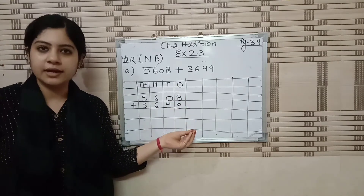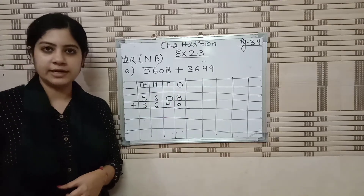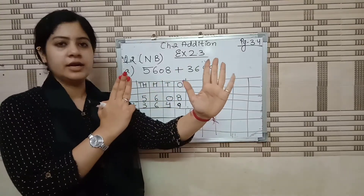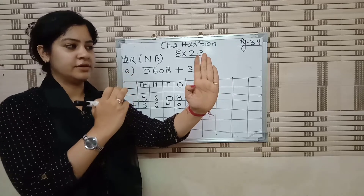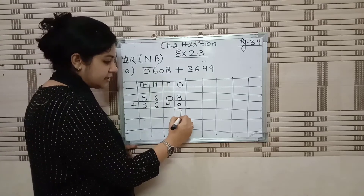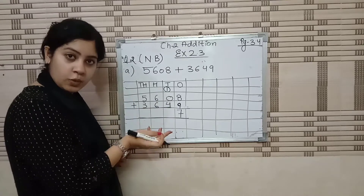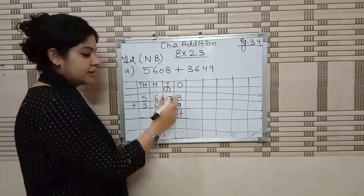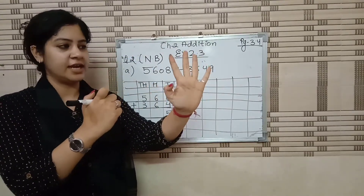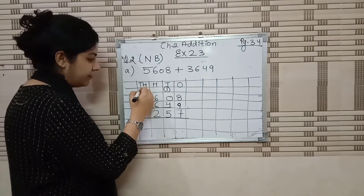Now start the addition from the ones place. 9 is the bigger number, 8 on a finger — after 9: 10, 11, 12, 13, 14, 15, 16, 17. Seventeen is a two-digit number. So 7 over here and 1 carry forward. 4 plus 0 is 4, and 4 plus 1 carry is 5. Then for hundreds: 6 in mind, 6 on finger — after 6: 7, 8, 9, 10, 11, 12. So 2 over here and 1 carry forward.